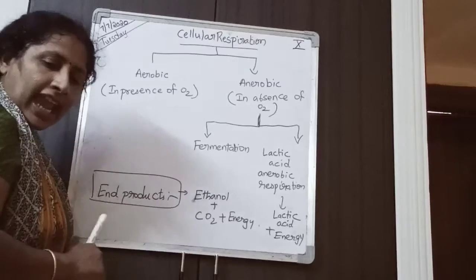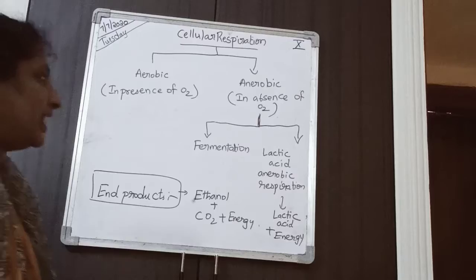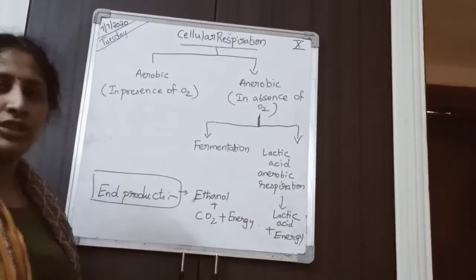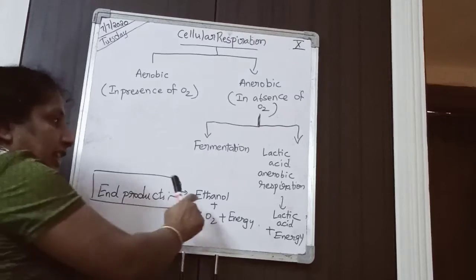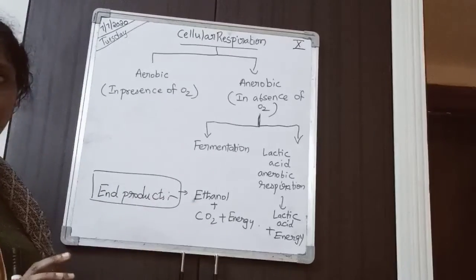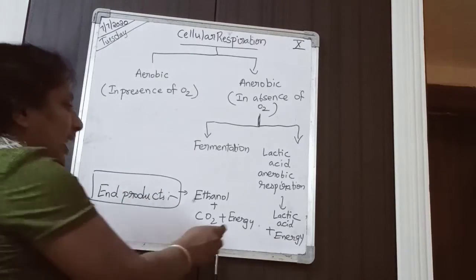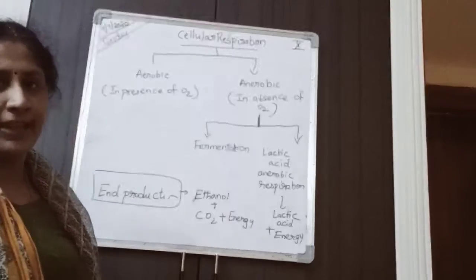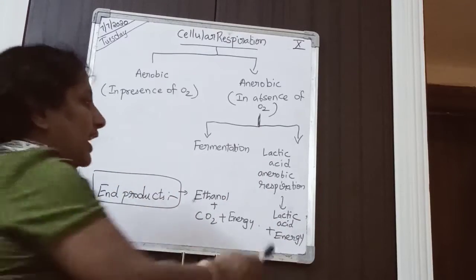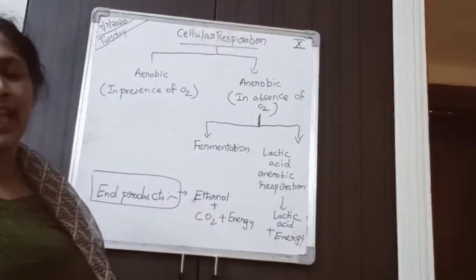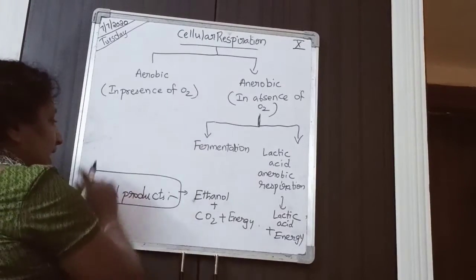What are the end products of anaerobic respiration? When you see fermentation, the end products are ethanol or ethyl alcohol, carbon dioxide, plus energy. Energy is liberated — that energy is nothing but ATP. During lactic acid anaerobic respiration, lactic acid is produced and energy is produced. These are the end products.